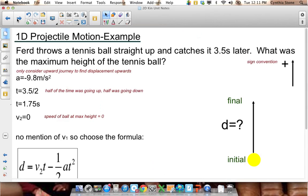So just a little example. Ferd throwing his tennis ball. Here's his tennis ball, it's got his hand 3.5 seconds later, and we want to know how high does it go. I think in grade 11 you might have done a lab with this. So what we're going to do, first of all, is we know it comes back to his hand 3.5 seconds later, but we're only going to concern ourselves with the up portion of the trip.